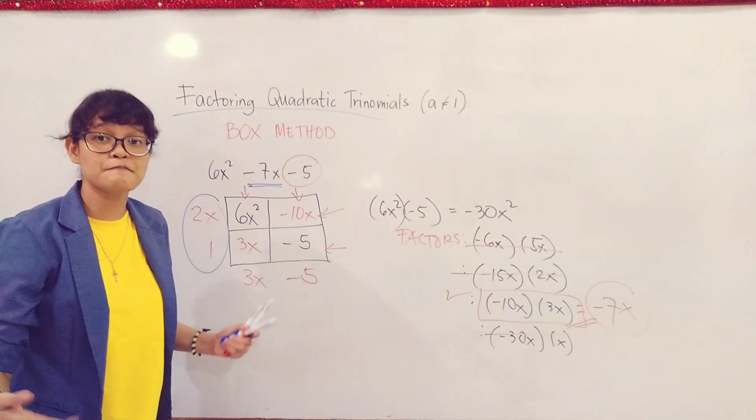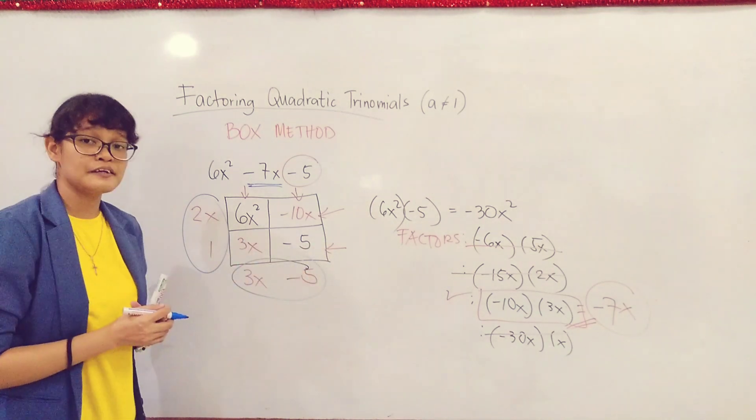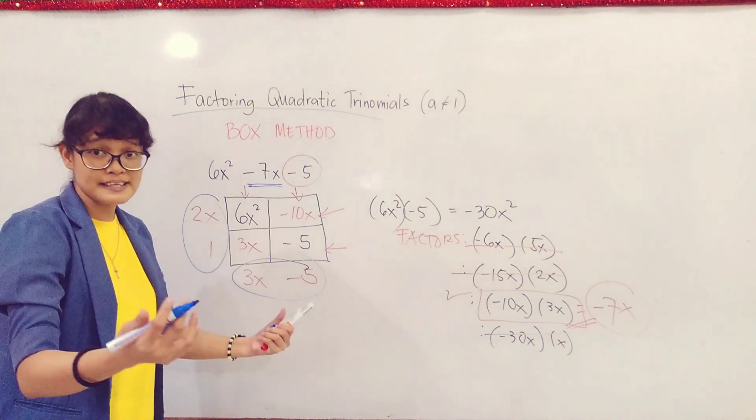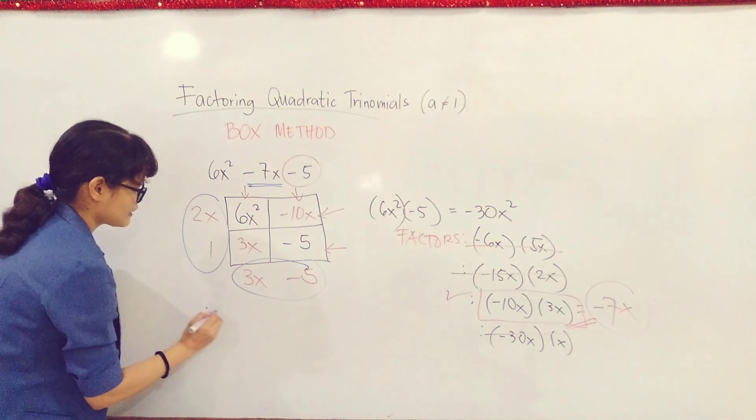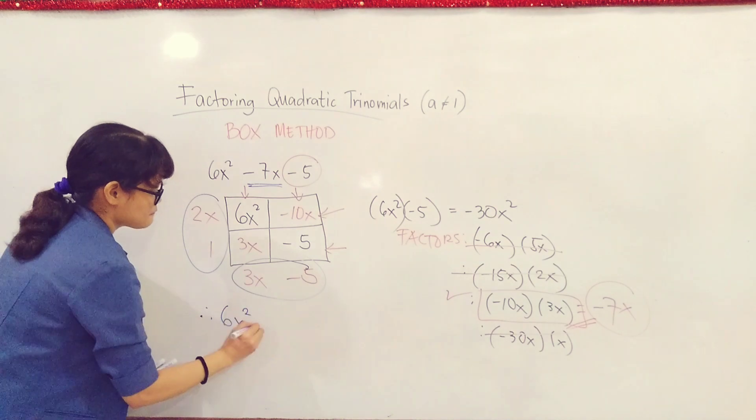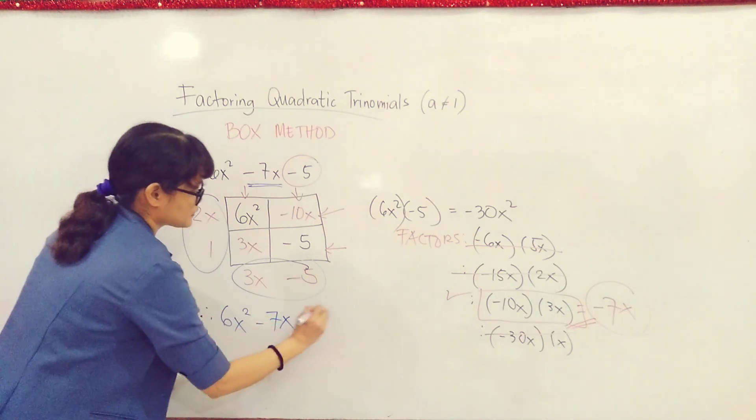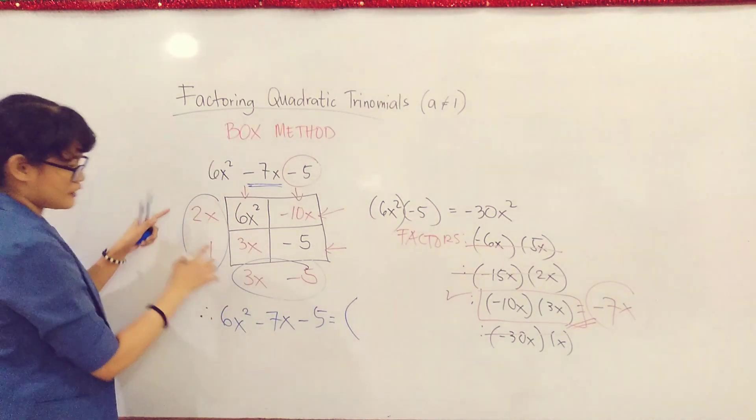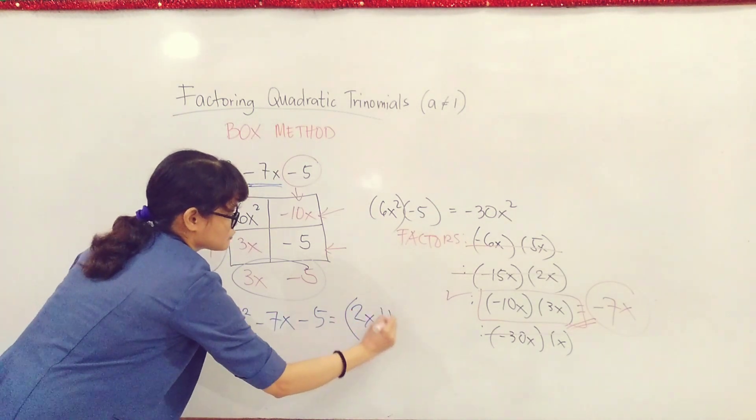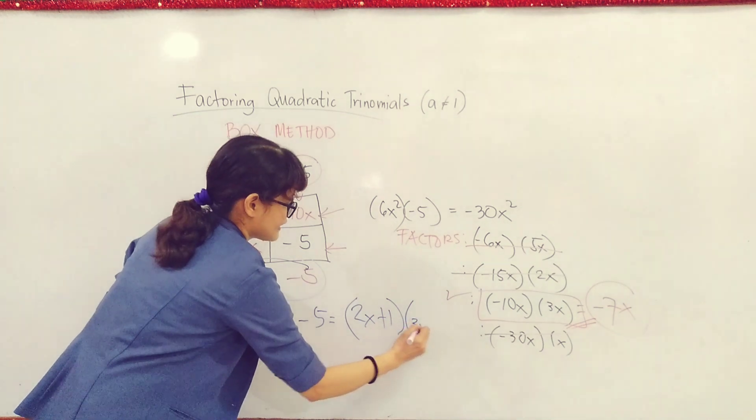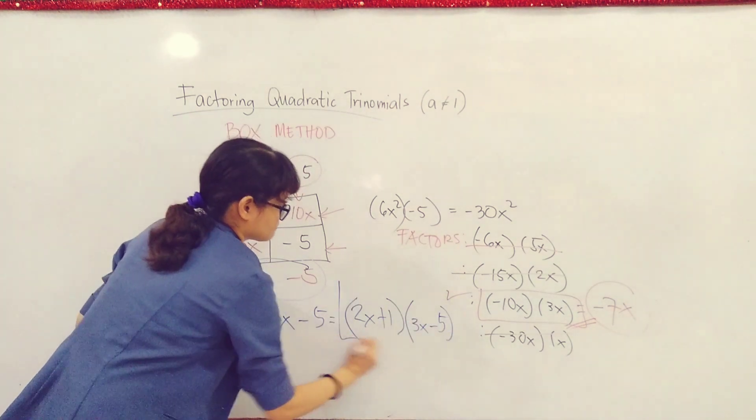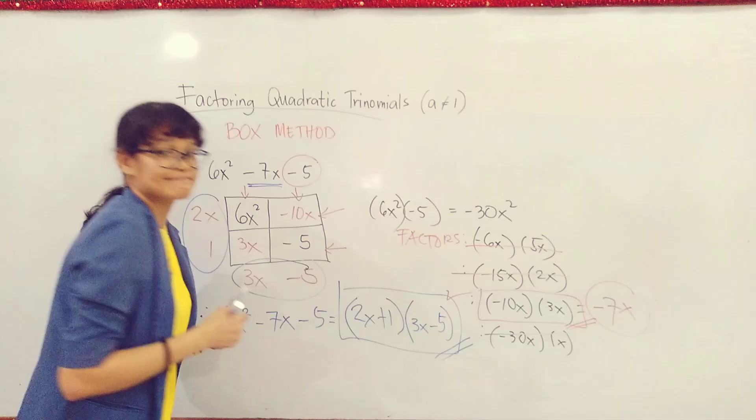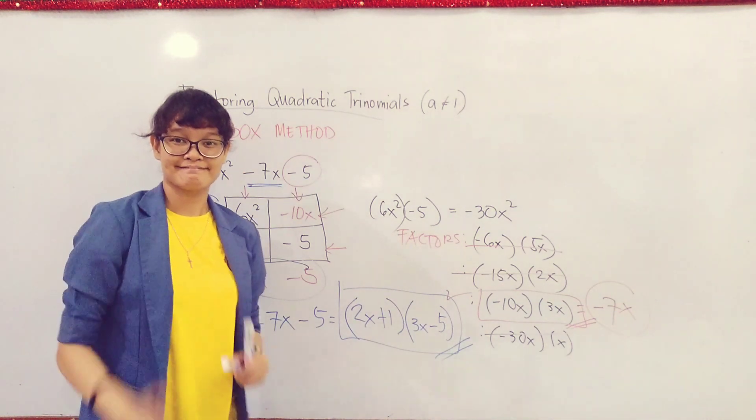Therefore, 6x² - 7x - 5 is simply equal to the product of, we have (2x + 1) times (3x - 5).